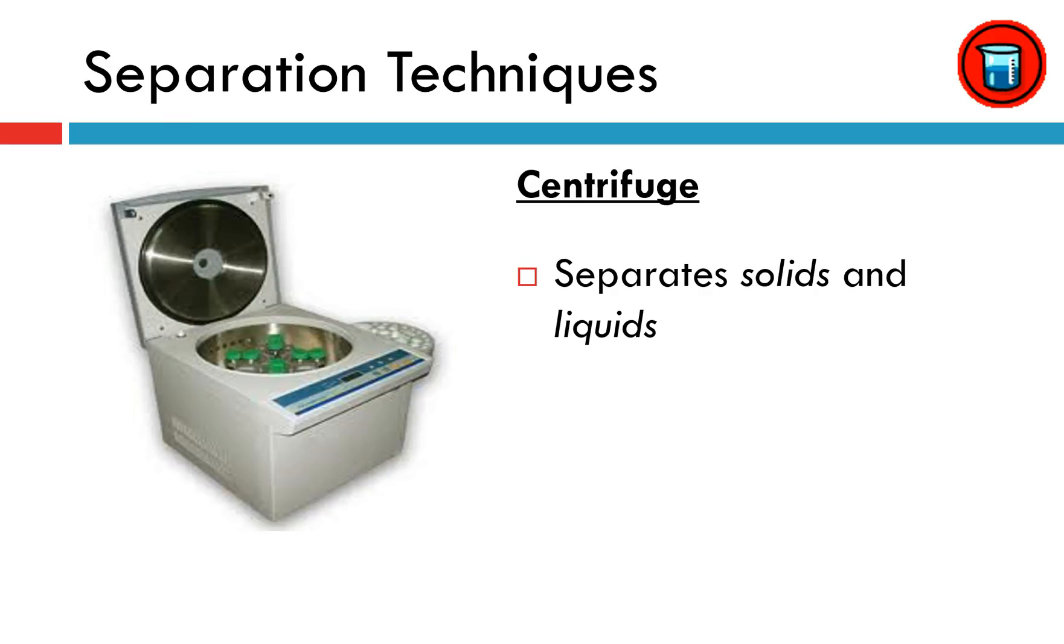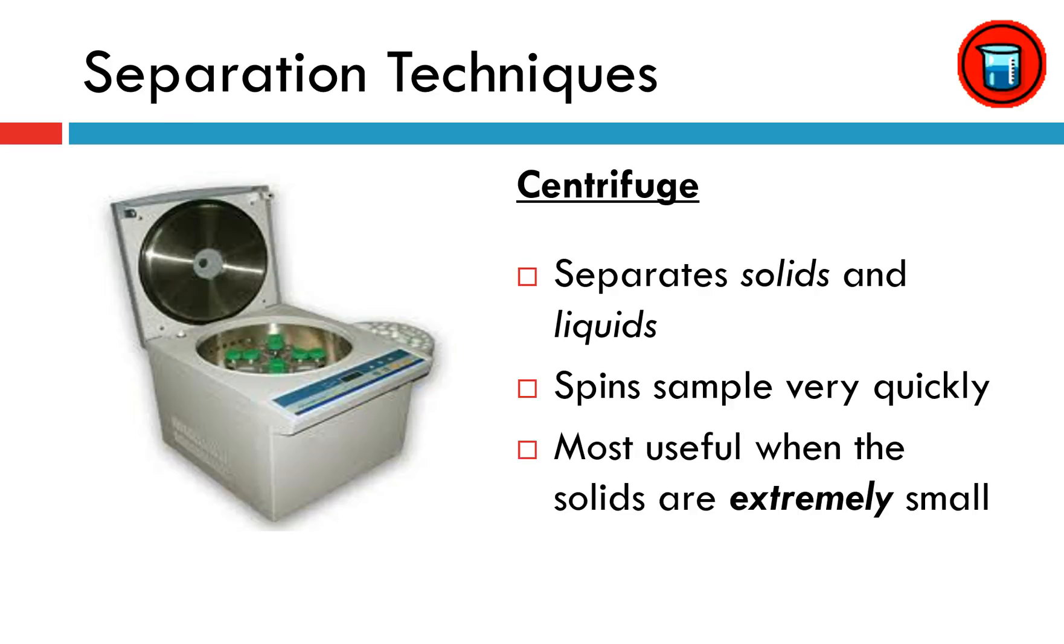Not to be gross, but if you try to pass blood through a filtration funnel, you're probably not going to be able to separate out those incredibly small components. That's when a centrifuge would be useful. So again we're going to spin those samples really quickly, separate them by density, and it's used when the solids are extremely small. Again think on the order of platelets and red and white blood cells - extremely tiny.